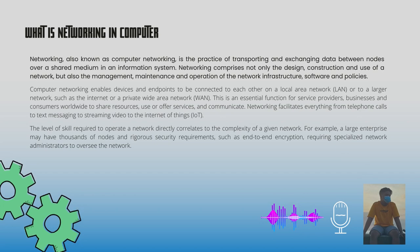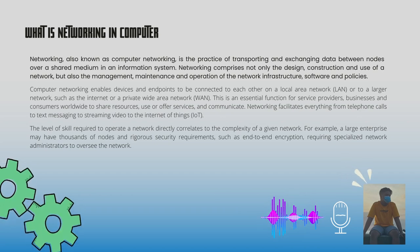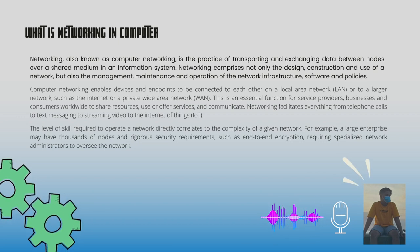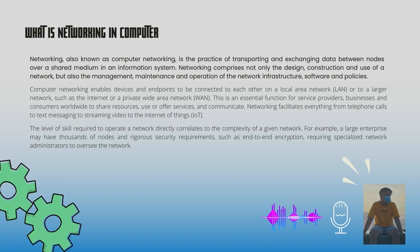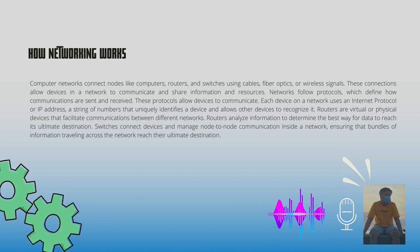Networking facilitates everything from telephone calls to text messaging to streaming video to the Internet of Things (IoT). The level of skill required to operate a network directly correlates to the complexity of a given network. For example, a large enterprise may have thousands of nodes and rigorous security requirements such as end-to-end encryption, requiring specialized network administrators. Computer networks connect nodes like computers, routers, and switches using cables, fiber optics, or wireless signals.